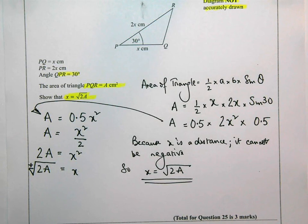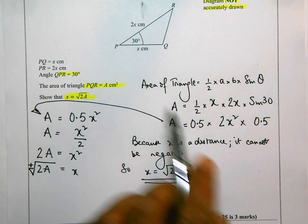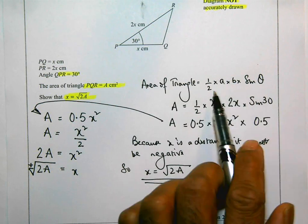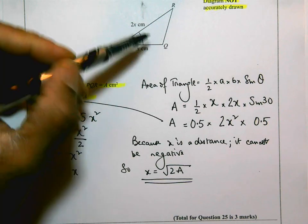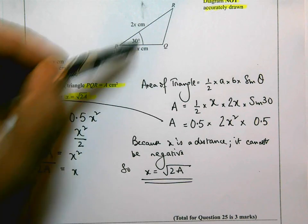Make sure you're quite familiar with this formula for the area of a triangle. A half AB sine C or sine theta. A half the length of the two sides times the sine of the angle between them. Make sure you could do that. Make sure you can get full marks in it.